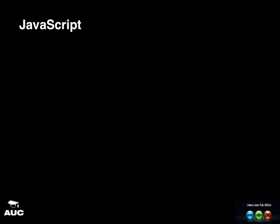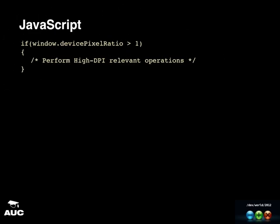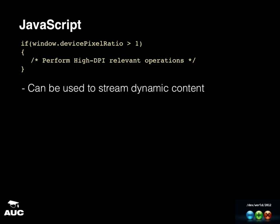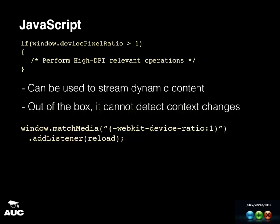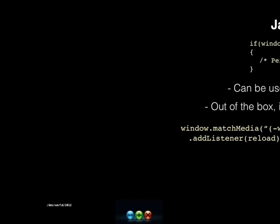For JavaScript: if you're making a game or something with a lot of dynamic rendering, there's a property in the `window` object — `devicePixelRatio`. If the device pixel ratio is greater than one, you can perform high DPI relevant operations and stream down dynamic content. Out of the box it can't detect context changes, but there's another line of code you can register — a callback function that watches for when that property changes and fires a function when it does. This is actually how Apple handles retina content on their website.